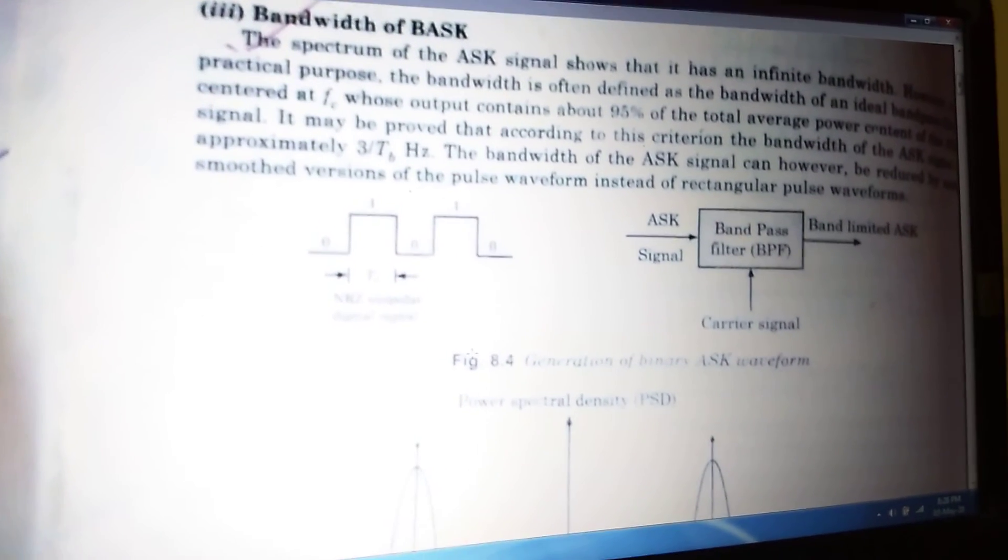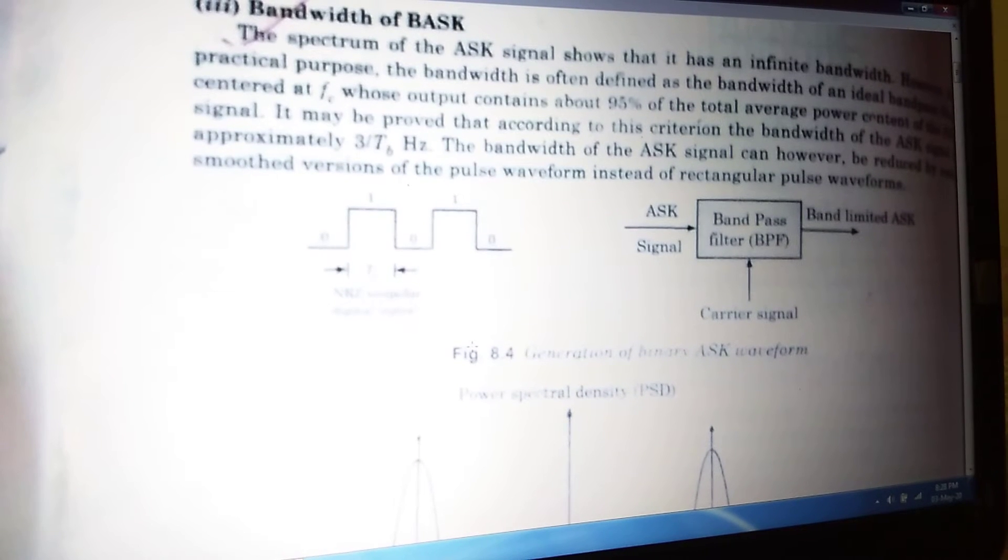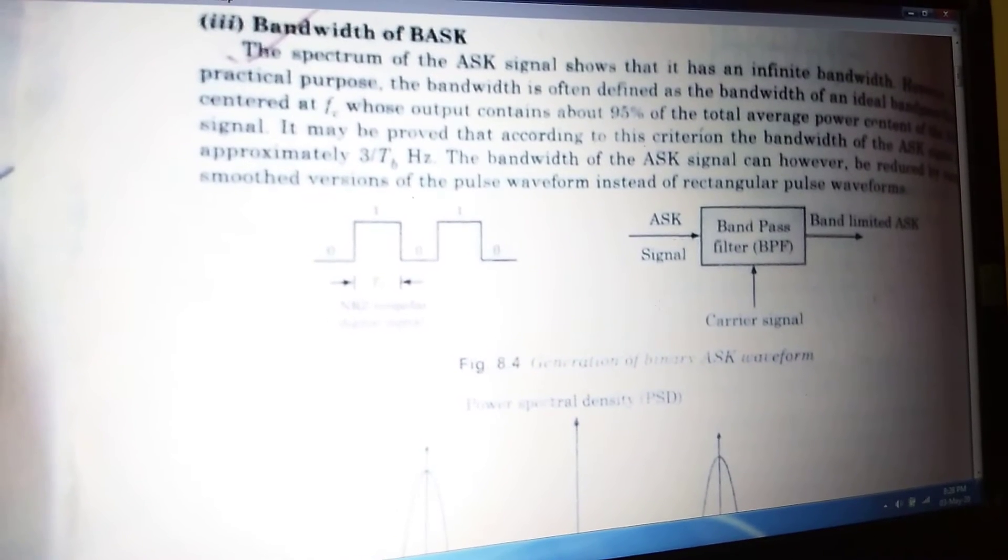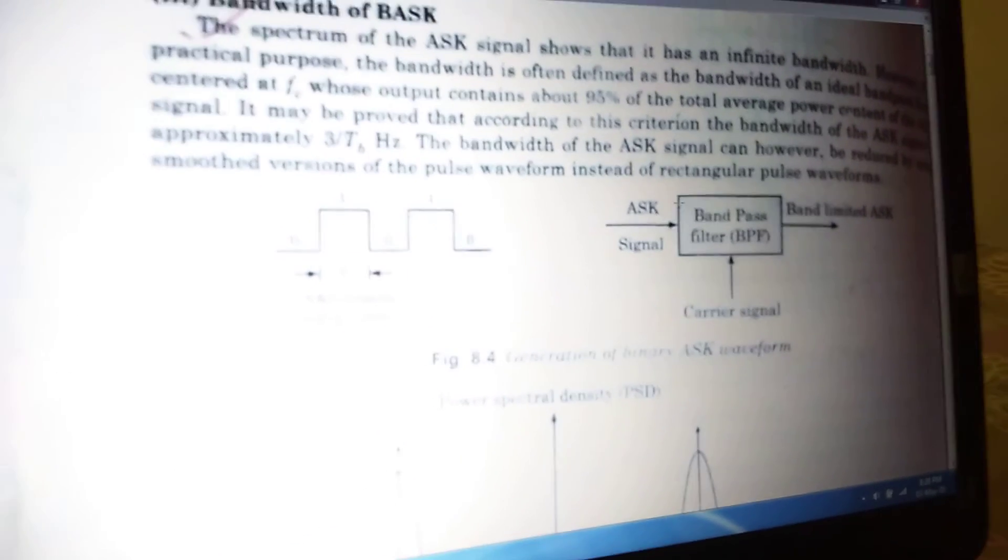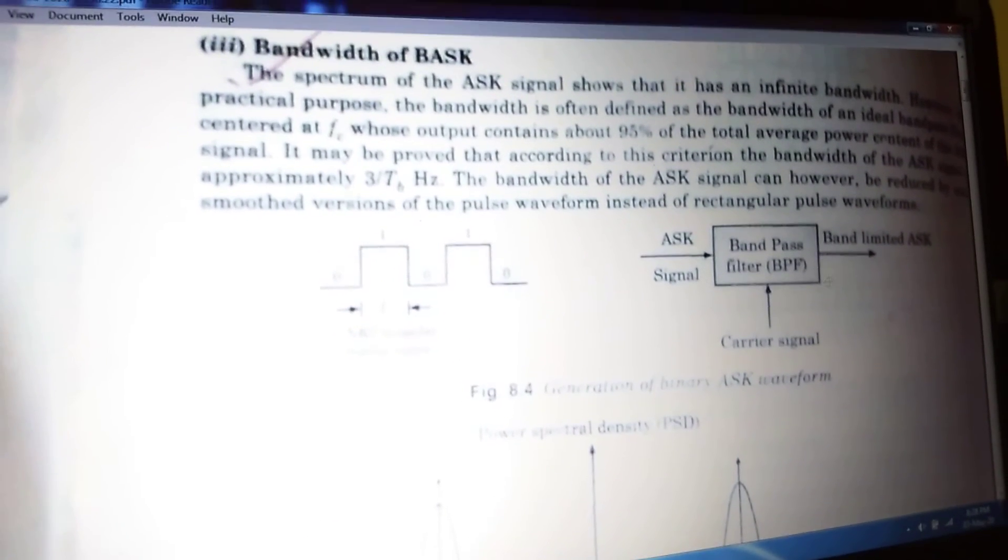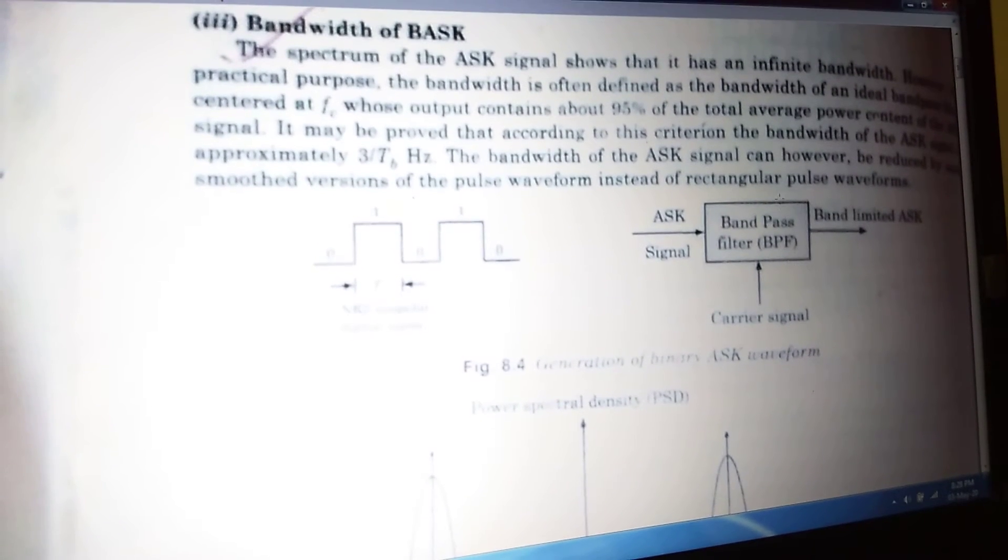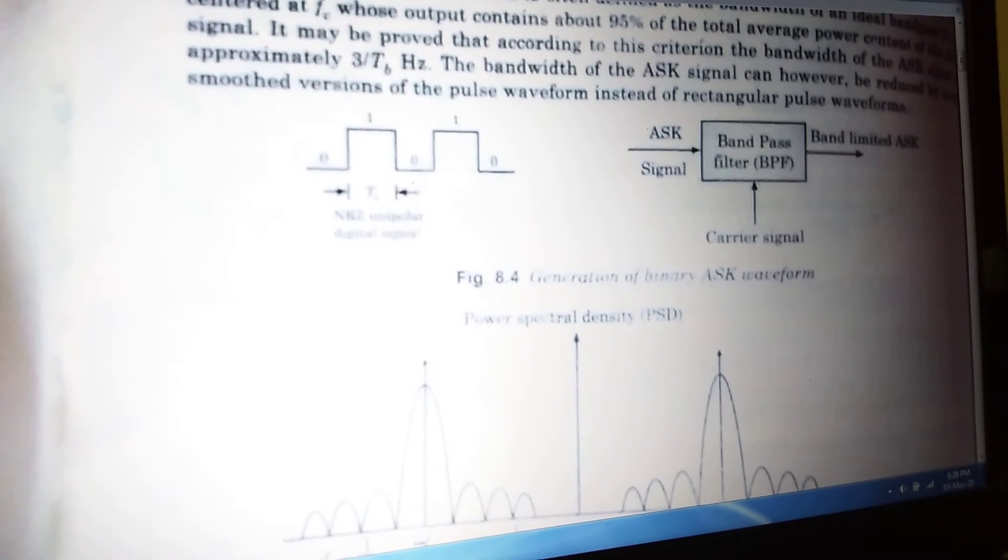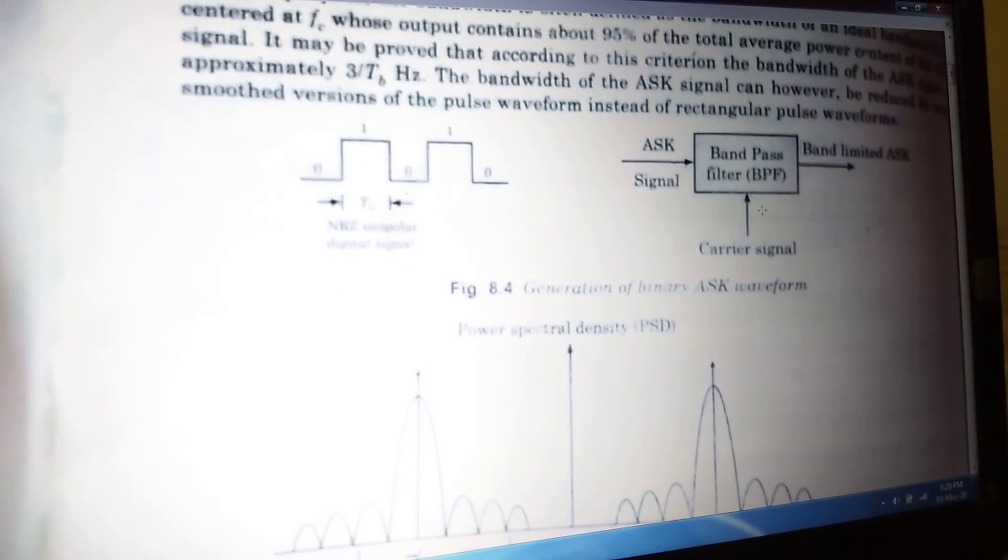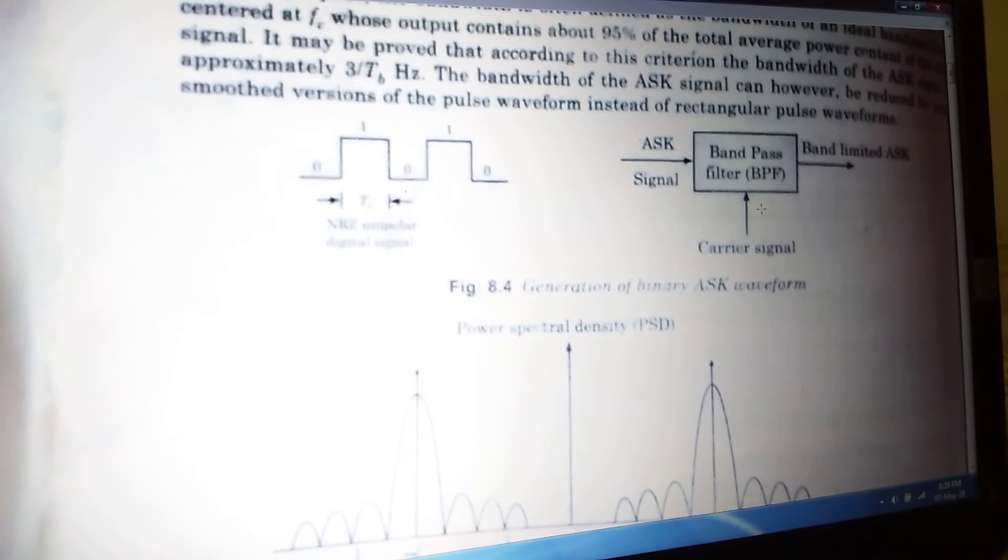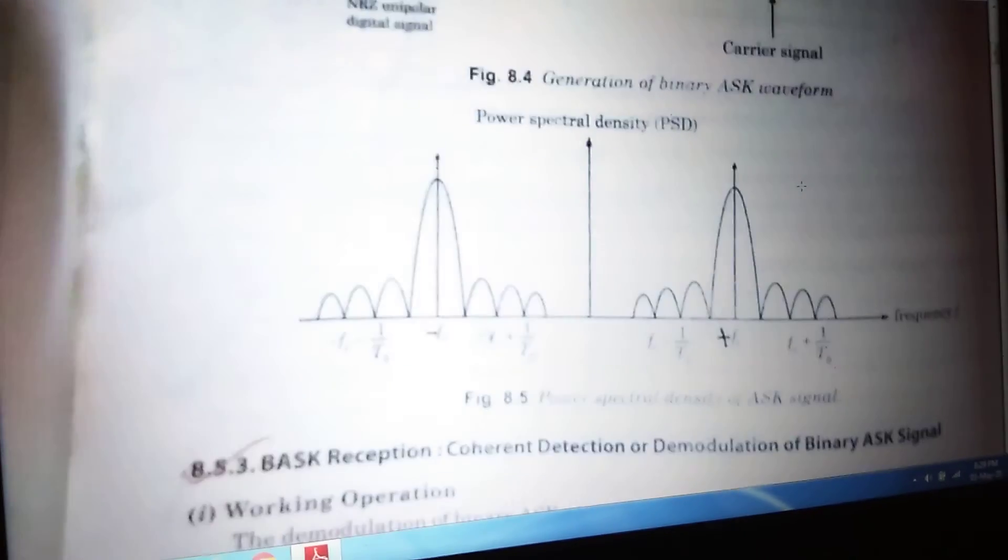Now we will see how can we generate the binary ASK waveform. If we see the generation, we will find that in the input we are giving the ASK signal. Next, we are using one bandpass filter, the short form is BPF, and the output is basically bandlimited ASK. We are giving the carrier signal to the bandpass filter. So two inputs: ASK signal and the carrier signal, and the output is bandlimited ASK. That is the generation of ASK.